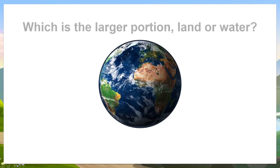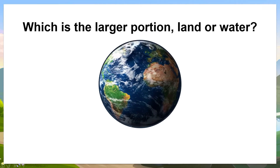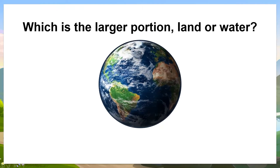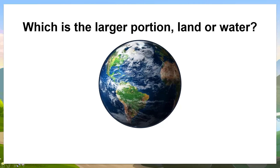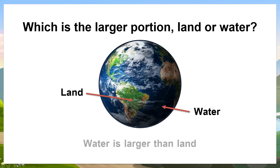Which is the larger portion — land or water? Look at the blue color on planet Earth. It represents the water, and the green and brown colors represent the land. As we can see, there is more water on Earth than land. The water is larger than land.